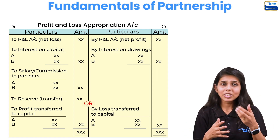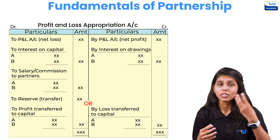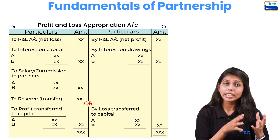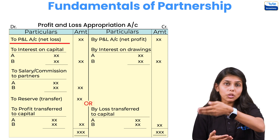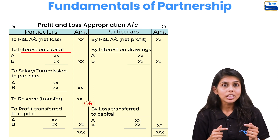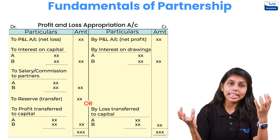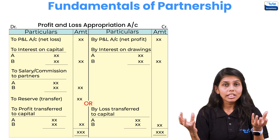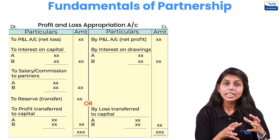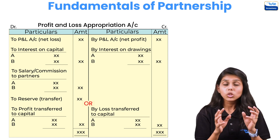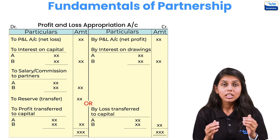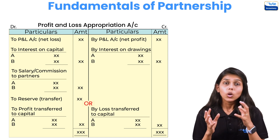If there are two or three partners, any interest on drawings is an income for the firm and is credited in the appropriation account. On the debit side, if there was a net loss from the P&L account, it is transferred to the debit side. Next is interest on capital — whatever money the partners have introduced as capital, if the firm pays interest on that, it is interest on capital, which is an expense for the firm and is debited.